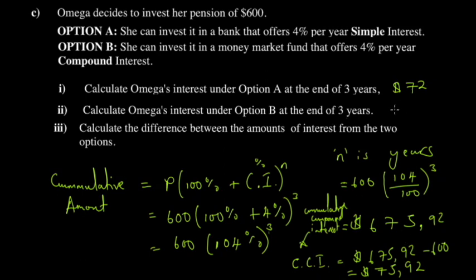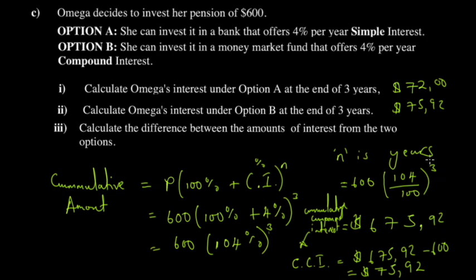So your compound interest value is $75.92. This part was tricky, so I advise you to commit the formula to memory. The cumulative amount is what you'll have after three years under this compound interest investment: Principal × (100 + compound interest rate)/100 to the power n. Remember to convert the percentage to a fraction, then raise it to the power equal to the number of years — in this case, three.